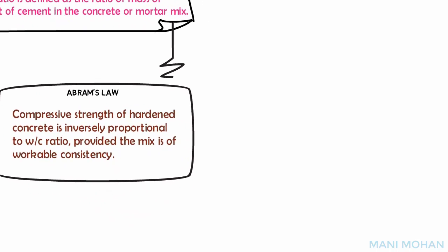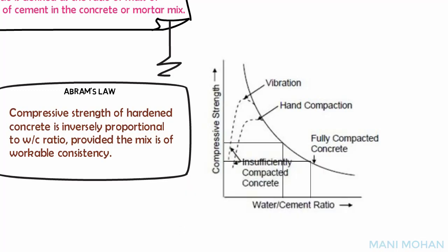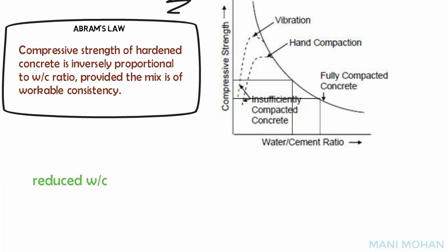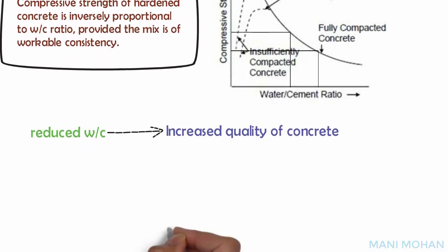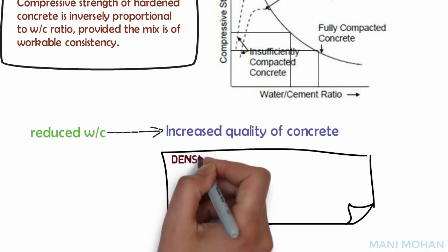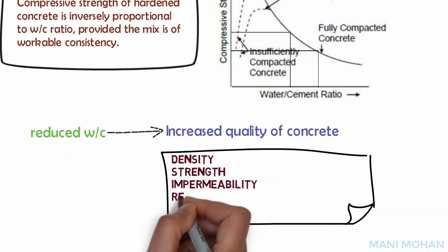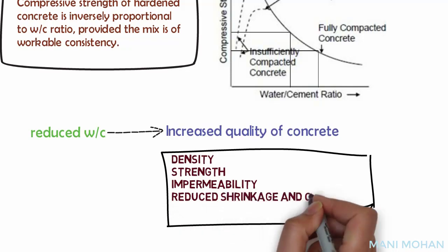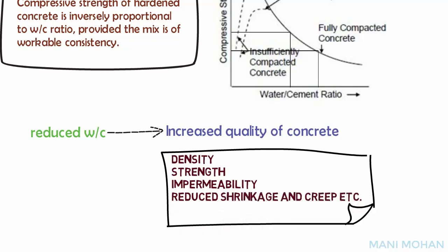It can be observed from the graph that for fully compacted concrete, with an increase in water-cement ratio, compressive strength is reduced. A reduction in the water-cement ratio generally results in increased quality of concrete in terms of density, strength, impermeability, reduced shrinkage and creep, etc. Shrinkage and creep of concrete will be discussed in a separate session.